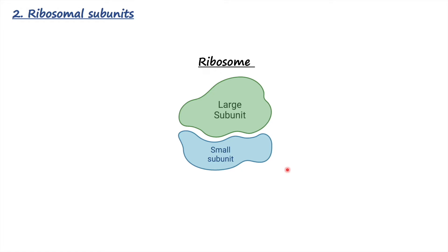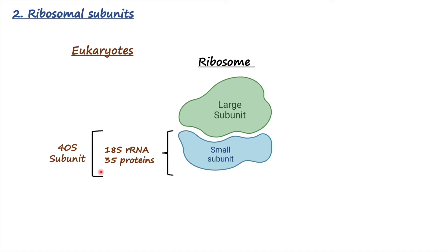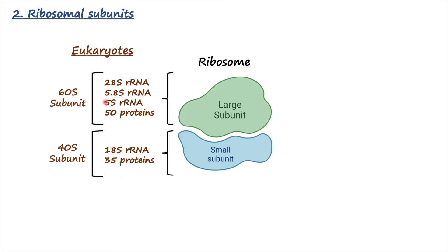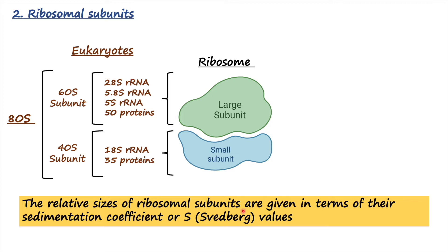Now let's talk about the ribosome. The ribosome has two subunits — a small subunit and a large subunit — and these subunits are made up of ribosomal RNA and proteins. In eukaryotes, the small ribosomal subunit is called the 40S subunit, and the large ribosomal subunit is 60S. Together they make up the 80S ribosome. The 'S' refers to the sedimentation coefficient, or Svedberg values.